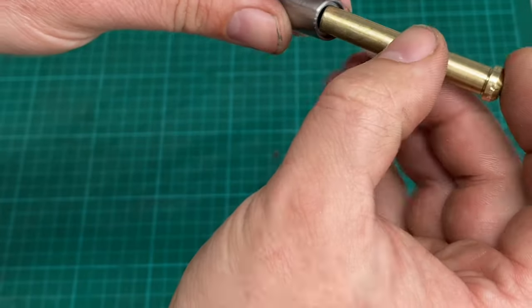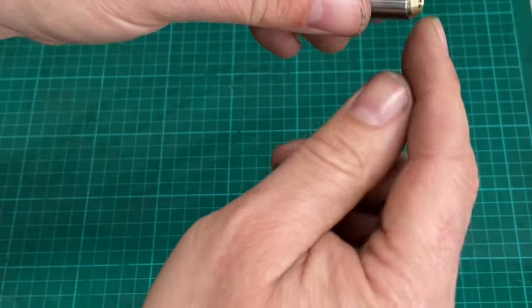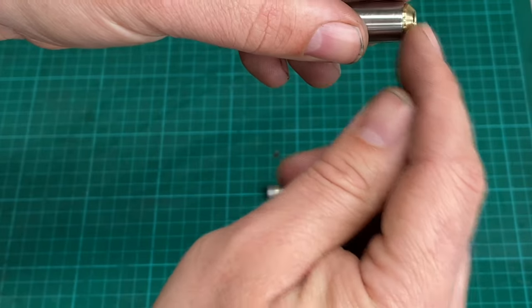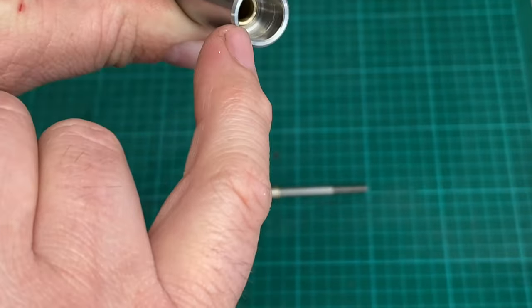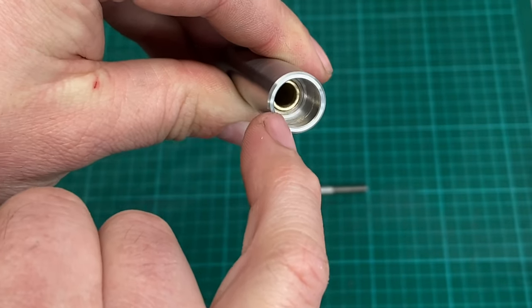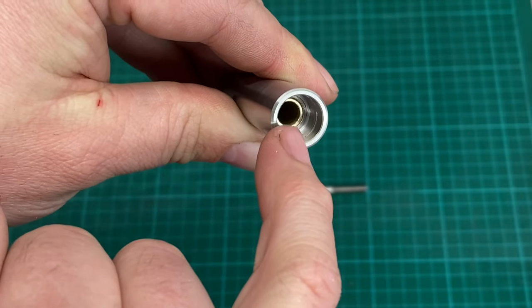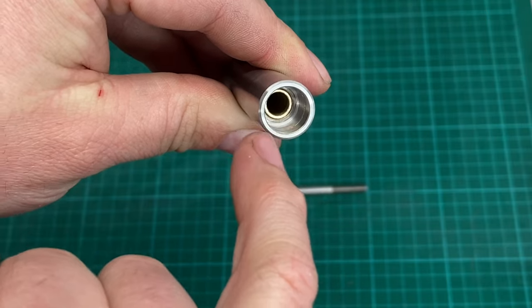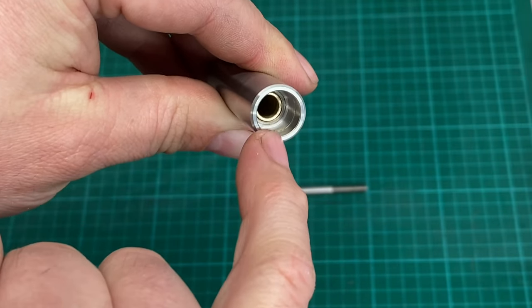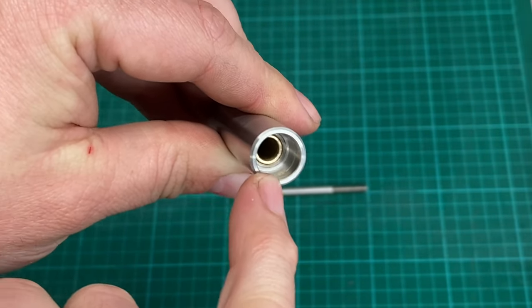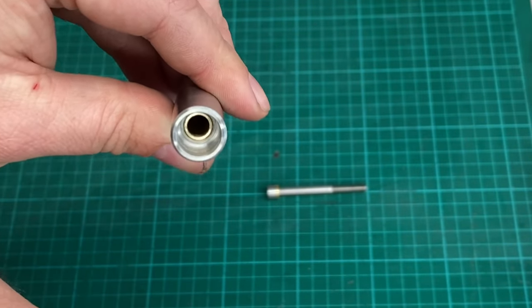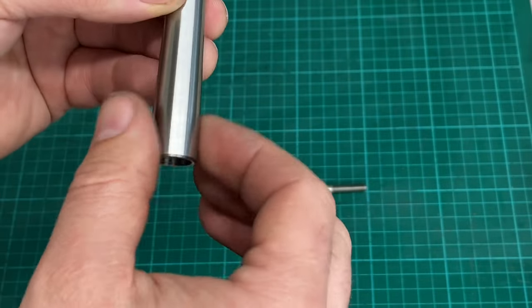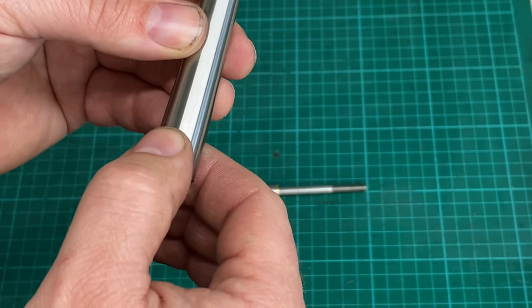So that when this goes in here it fits into that counter bore, which is an 11 mil counter bore about one and a half deep. So that pops into there and then inside there the end face of the bush wants to be just proud of the shoulder in the counter bore by about 30 to 50 microns I think is about right, because I don't want it to bind, I don't want it to be a tight fit, I just want to have a tiny amount of end float.